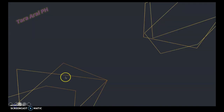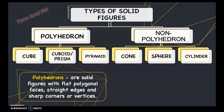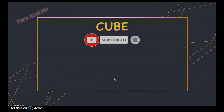There are two types of solid figures: polyhedron and non-polyhedron. Polyhedrons are solid figures with flat polygonal faces, straight edges, and sharp corners or vertices. Non-polyhedrons are solid figures whose surfaces are not all flat and do not have polygonal surfaces. Examples of polyhedrons are cube, prism, and pyramid. For non-polyhedrons, we have cone, sphere, and cylinder.